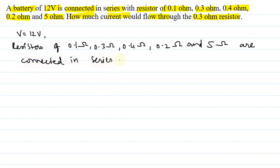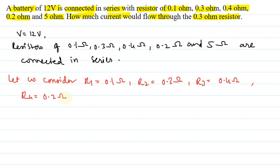Now let us find the answer. Let us consider R1 equals 0.1 ohm, R2 equals 0.3 ohm, R3 equals 0.4 ohm, R4 equals 0.2 ohm and R5 equals 5 ohm.